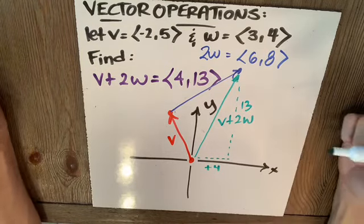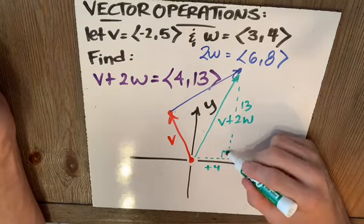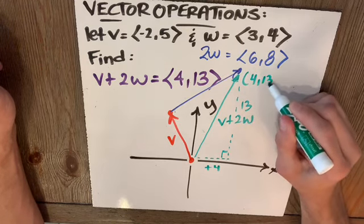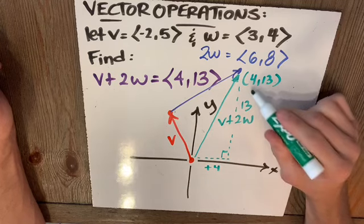Well, if we go from 0, 0, that's why I love standard position. If I'm going right 4 and up 13, you guessed it, our final resting spot will be here at 4, 13.